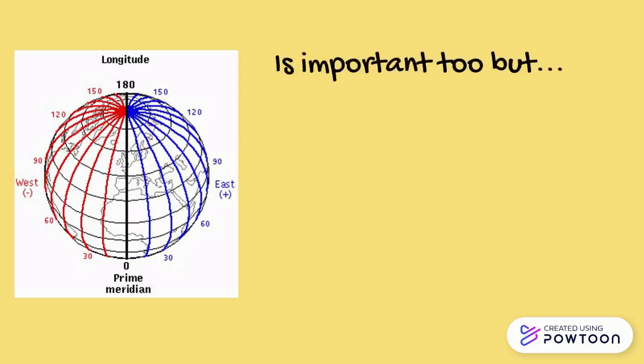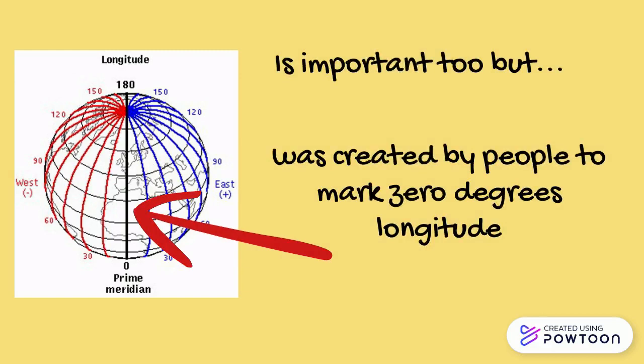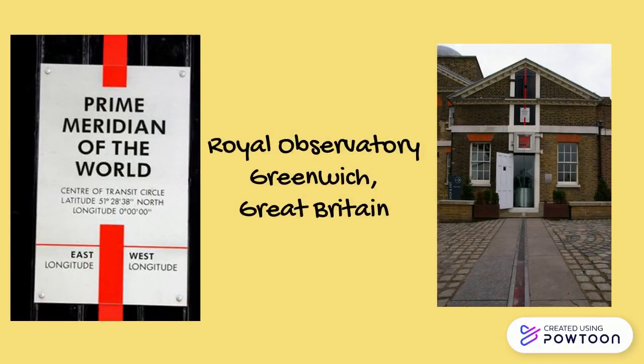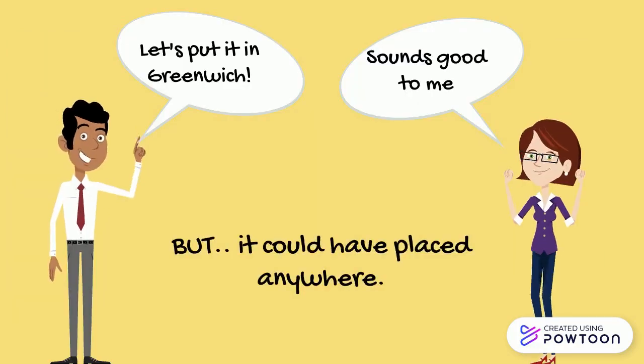The prime meridian, also an imaginary line, was a line created by people to simply mark zero degrees longitude. It just happens to pass through the city of Greenwich in Great Britain, but it could have been located anywhere.